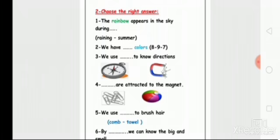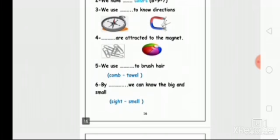Number four: what is attracted to the magnet - paperclips or a ball? Paperclips! We talked about materials attracted to the magnet. Nails, coins, and paperclips are attracted to the magnet.